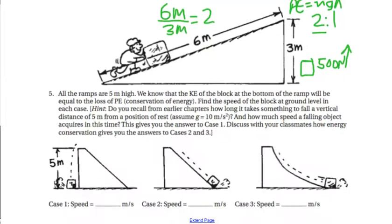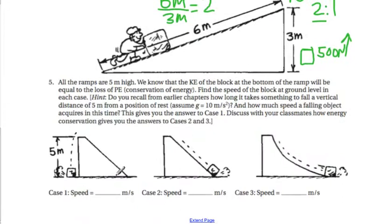Number five: all of the ramps in these pictures are 5 meters high. We know that the kinetic energy of the block at the bottom of the ramp will be equal to the loss of potential energy. Of course that's conservation of energy. Find the speed of the block at ground level in each case.